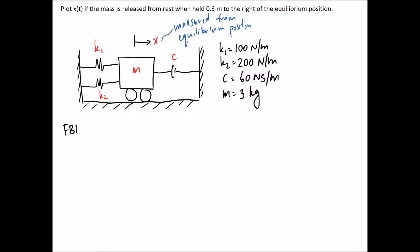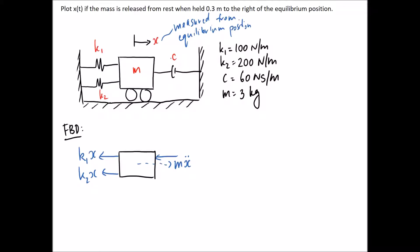We pull out the block and say it's going to move in the positive x direction. The mass times acceleration term is dotted in. If the block is moving to the right, the springs and damper are going to pull it back. The force in the first spring is k1 times x, the second spring is k2 times x, and the force in the damper is proportional to velocity, so it's c times x-dot.